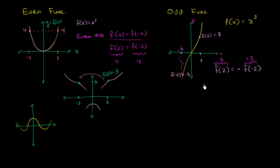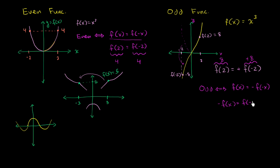So here's the definition: you are dealing with an odd function if and only if f of x equals the negative of f of negative x, for all x in the domain. Multiplying both sides by negative 1, you get negative f of x equals f of negative x. You'll also sometimes see it written as f of negative x equals negative f of x — that's just the two sides swapped.